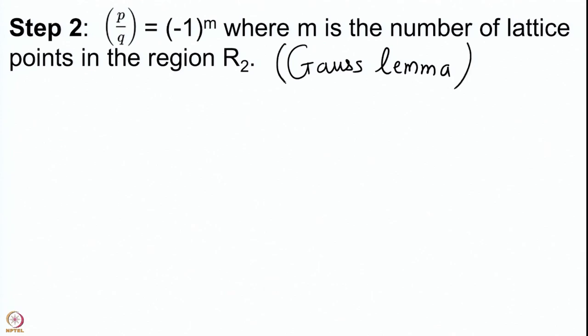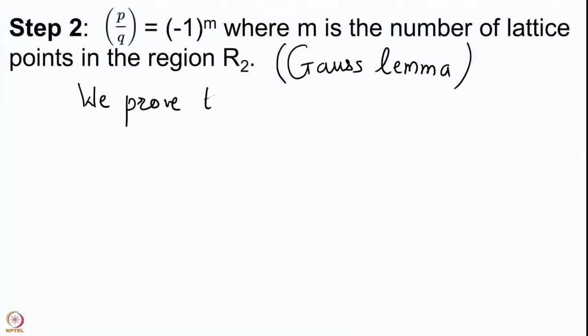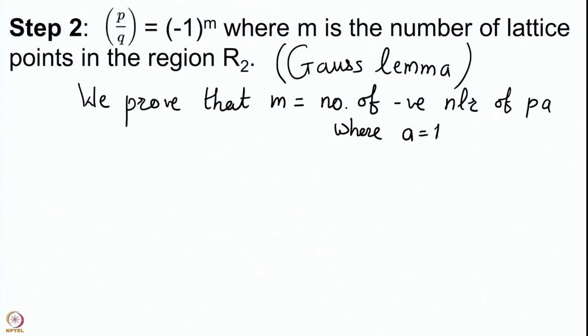We have to look at numerically least residues of multiples of p and see how many of those are negative. That is the number m, and we are also saying that m is the number of lattice points in the region R2. So we have to prove that m equals the number of negative numerically least residues of p·a, where a goes from 1 up to (q−1)/2, because we are taking the quadratic residue symbol modulo q for the element p. So we look at multiples p, 2p, 3p, up to ((q−1)/2)·p.